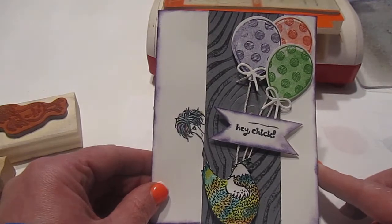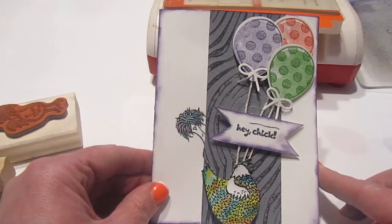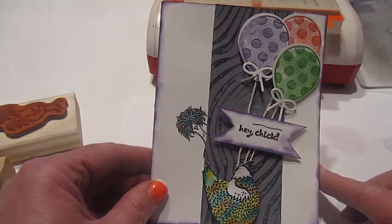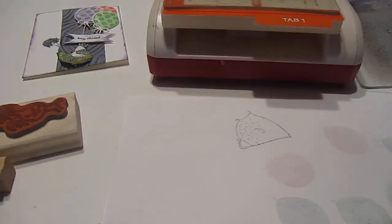What I did is I prepped everything up first to get the card started. So to make the balloons, what I did is I took the color purple that I have here, which is Elegant Eggplant.